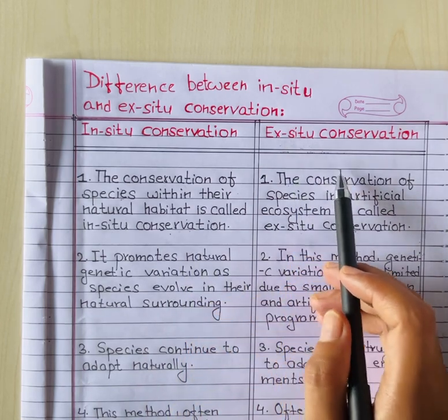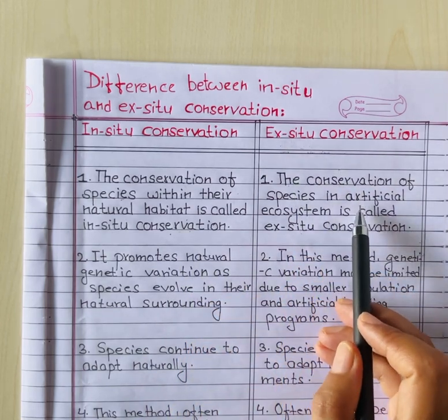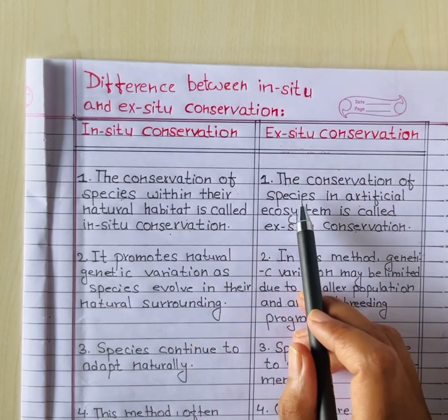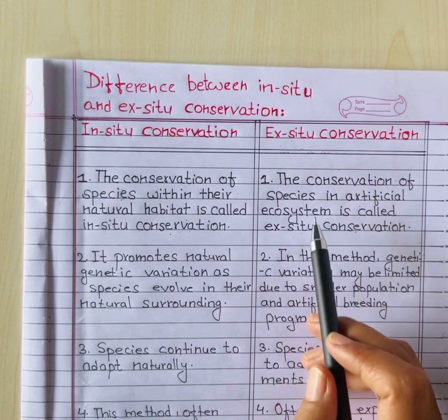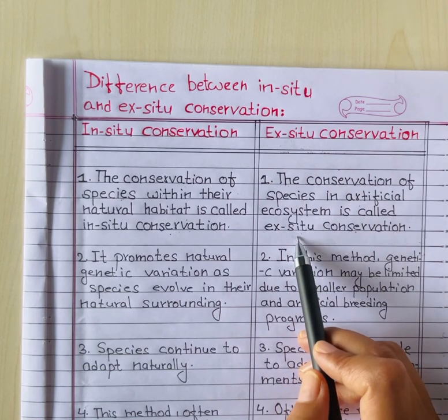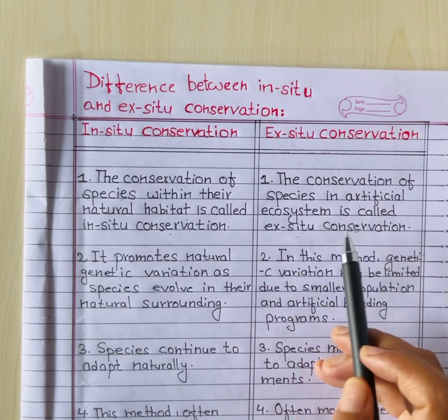In-situ conservation means conserving species in their natural habitat, whereas ex-situ conservation is the method of conserving species in an artificial habitat.